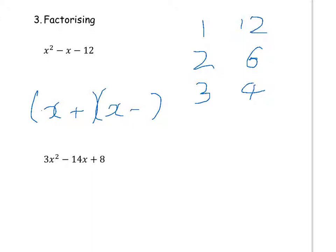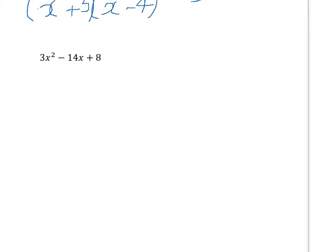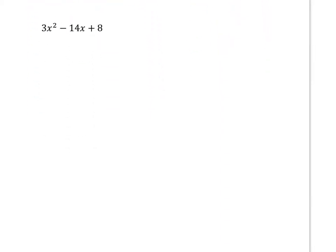3 minus 4 gives us minus 1, so in our bracket the positive number is 3 and we're taking away the 4. You can always check that's right by expanding it. Now, this is a more difficult style of factorising question: 3x squared minus 14x plus 8. This is the most difficult kind of factorising quadratics question. I'm going to show you two different methods — it's up to you which method you prefer.